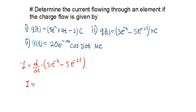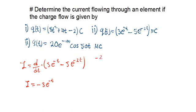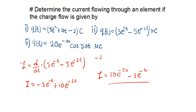So our current becomes: differentiating 3e^(−t) gives minus 3e^(−t). For −5e^(−2t), we keep it as is and multiply by the derivative of the power, which is minus 2. So minus 2 times minus 5 gives positive 10e^(−2t). Rearranging, our current is equal to 10e^(−2t) minus 3e^(−t) nanoamps.